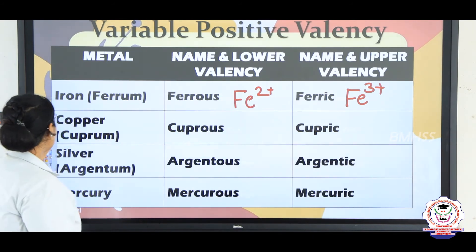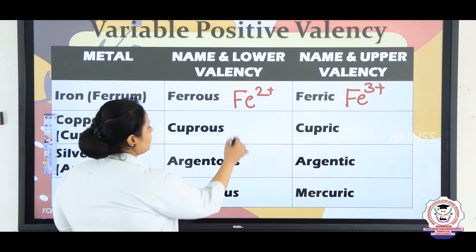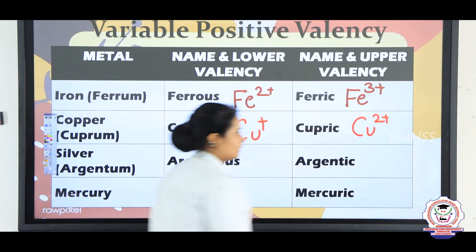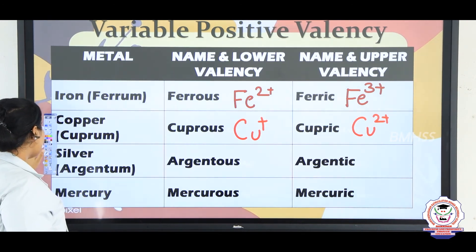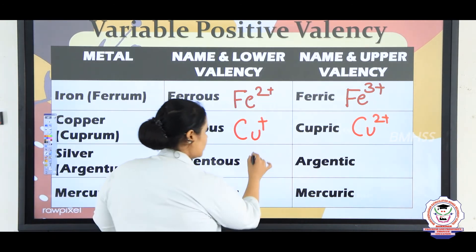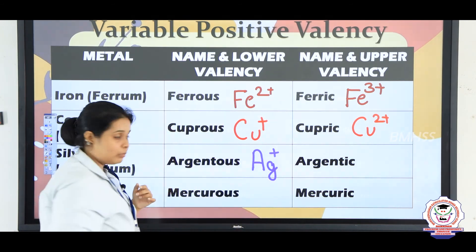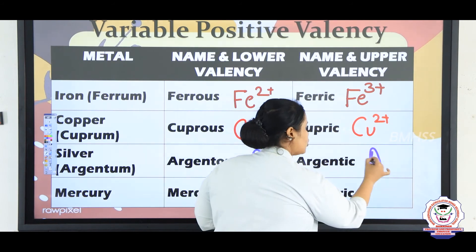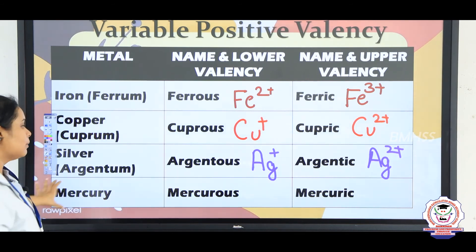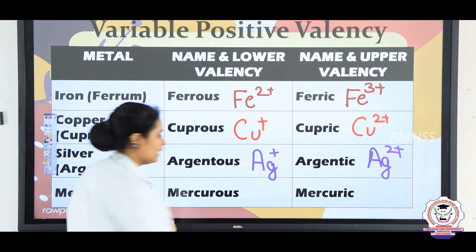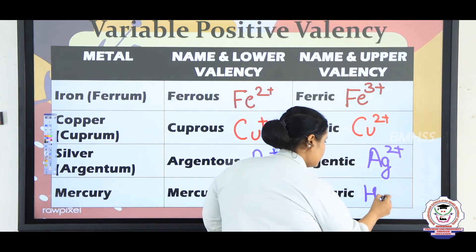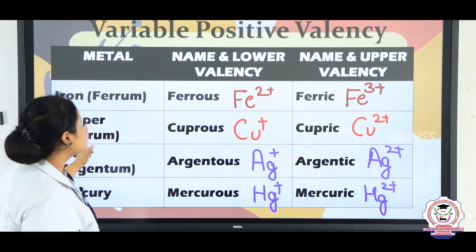Copper also has 2 valencies: removal of 1 electron gives Cu+ and removal of 2 electrons gives Cu2+. Silver, also known as argentous, can be written as Ag+, while argentic is Ag2+. Mercury, written as mercurous, is Hg+ and mercuric is Hg2+. This is the variable valency.